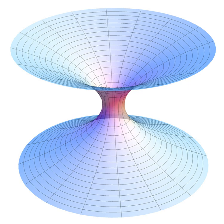A physical theory is a model of physical events. It is judged by the extent to which its predictions agree with empirical observations. The quality of a physical theory is also judged on its ability to make new predictions which can be verified by new observations.